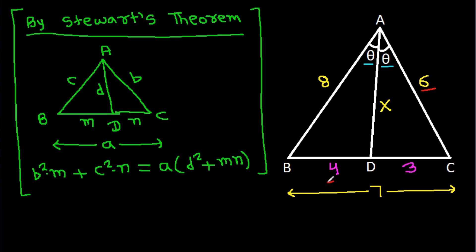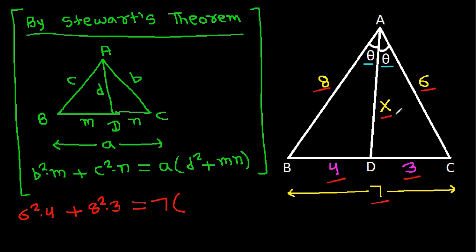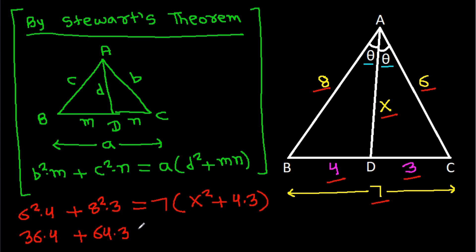Substituting the values: 6 squared times 4 plus 8 squared times 3. That gives 36 times 4 plus 64 times 3, which equals 7 times X squared plus 12.